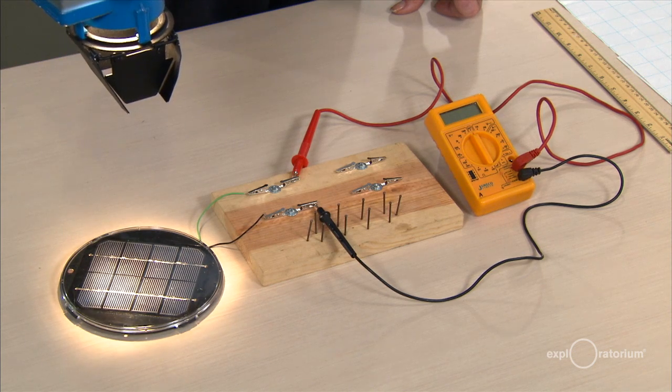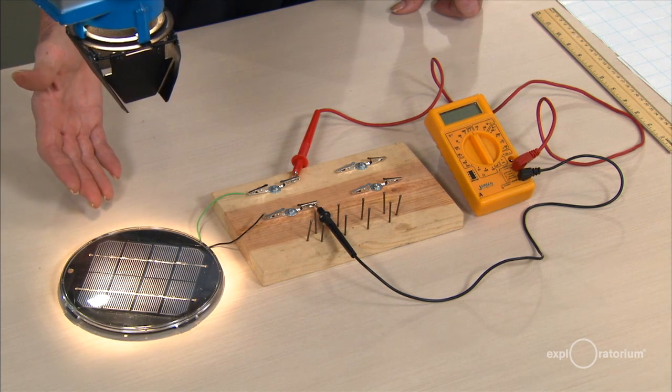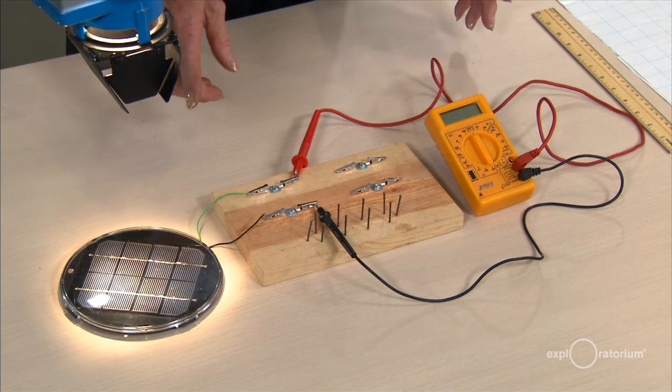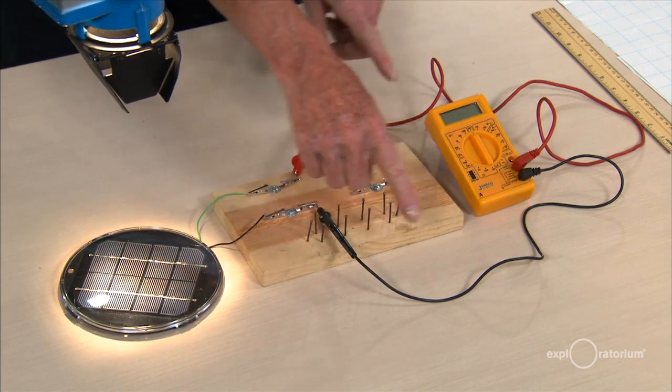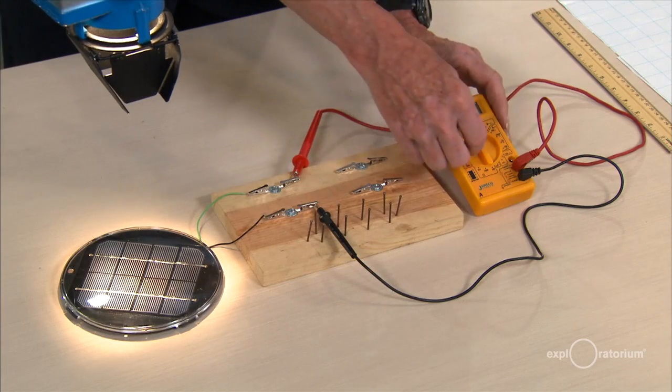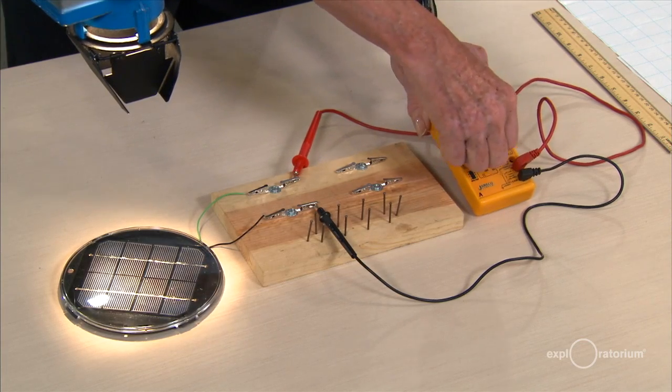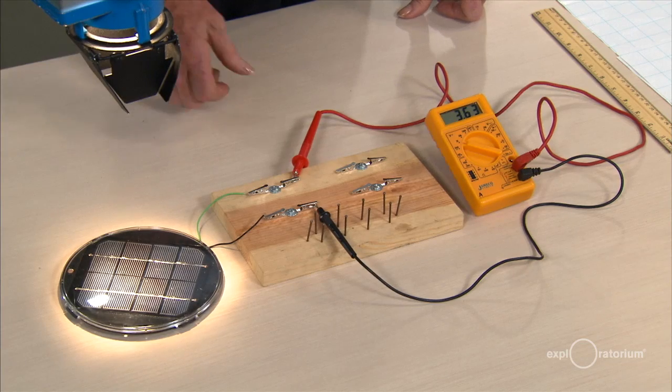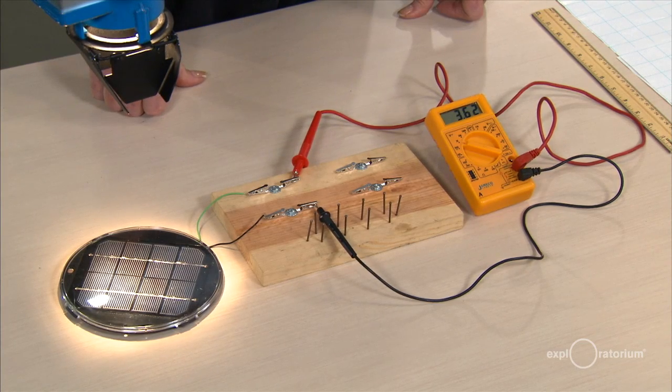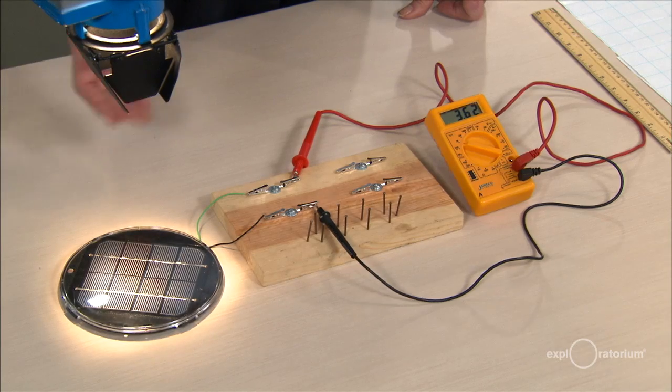The lamp light or the sunlight comes into the solar cell. The solar cell converts the light energy into electrical energy, into voltage and current. So the first thing I'm going to do is connect the two leads from the solar cell into the meter, and I'm going to turn the meter so it measures voltage. And you can see that even this light is creating 3.63 volts of electric voltage out of the solar cell.